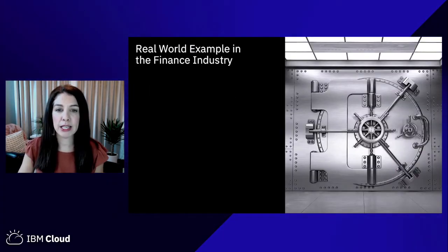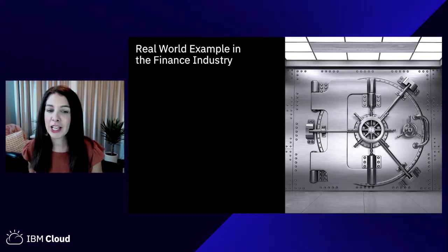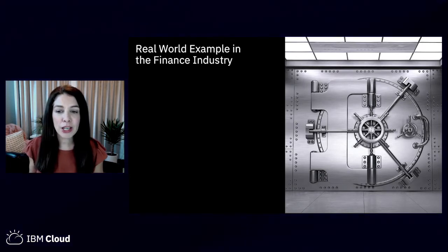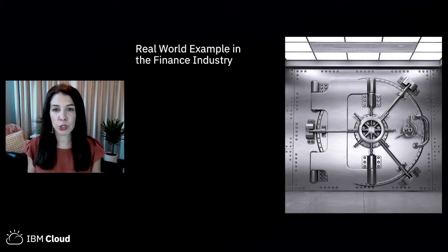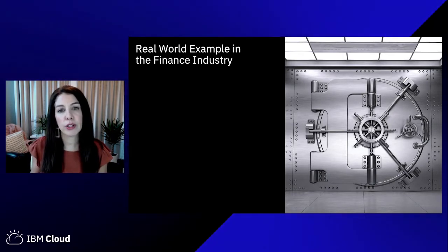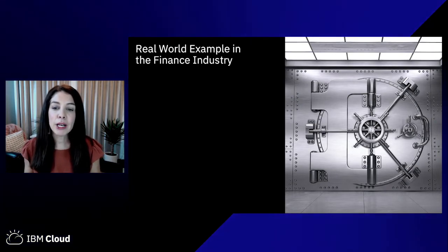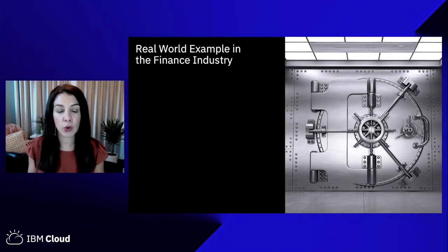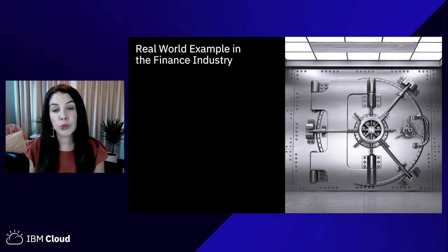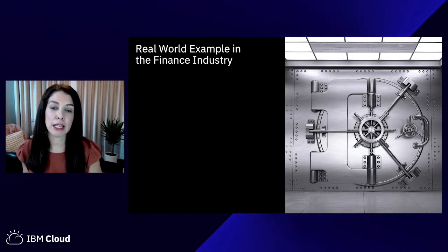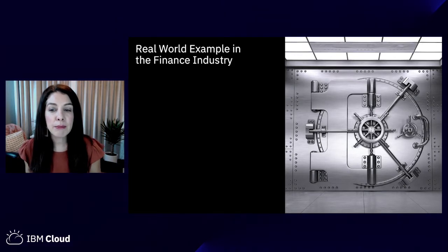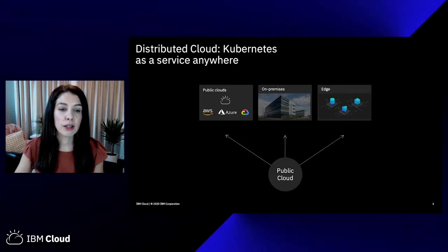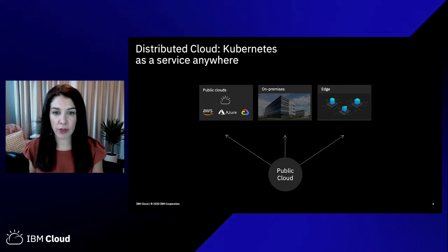The first example is in the financial industry. On the surface the financial industry might seem like it's all about money but it's really all about technology. Financial institutions need to create exceptional user experiences and they leverage AI and trading algorithms to help stay ahead of the market. It is also a very heavily regulated industry, so financial services clients need to iterate quickly leveraging cloud native tools and best practices, but they need to keep that data secure and compliant — and sometimes there are restrictions on where that data can live.